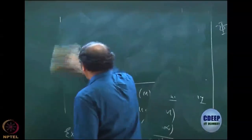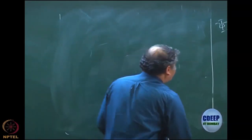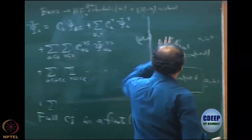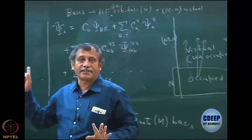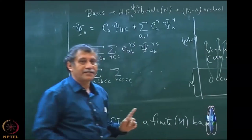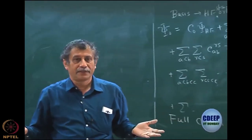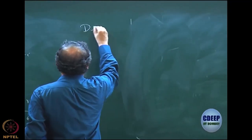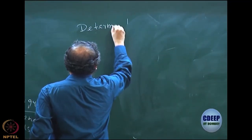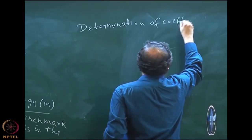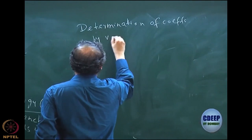When this becomes a form of the wave function, I now have to tell you that these determinants are fixed in CI. I am not changing the orbitals; the orbitals are defined. So what are my parameters here? The parameters are these coefficients C0, CAR, CABRS, etc., which have to be determined. This determination of the coefficients — in full CI — is done by variational methods.